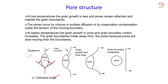At low temperature the grain growth is less and the pores will remain attached, consequently impeding the grain boundaries and restricting grain growth. As far as pore movement is concerned, pore movement happens by volume or surface diffusion or by the evaporation-condensation mechanism under the tension of the moving boundary. As the boundary moves, the pore exerts some stress, and due to that the pore will also tend to move.